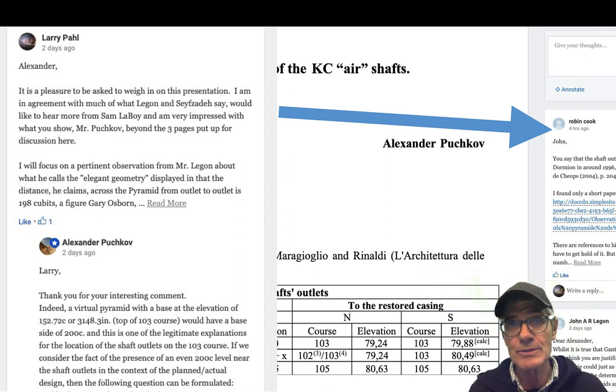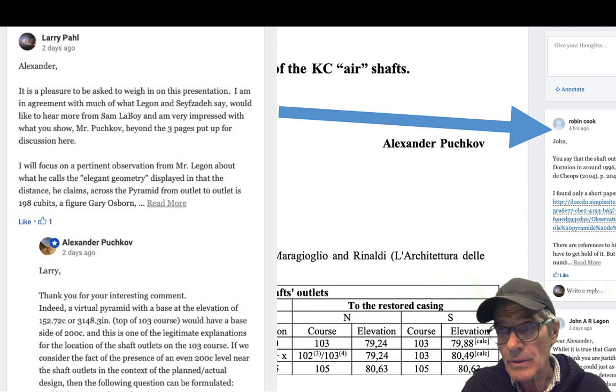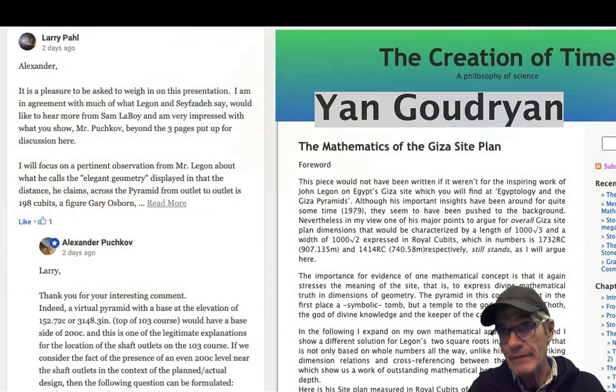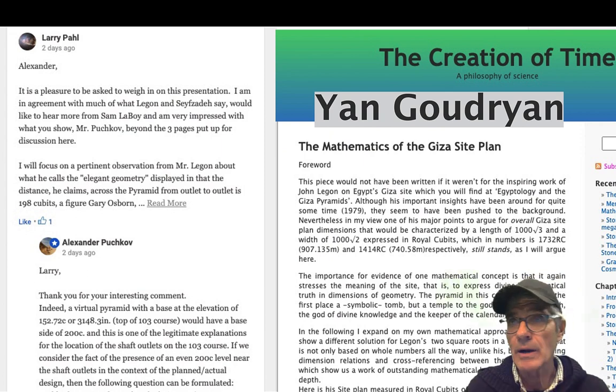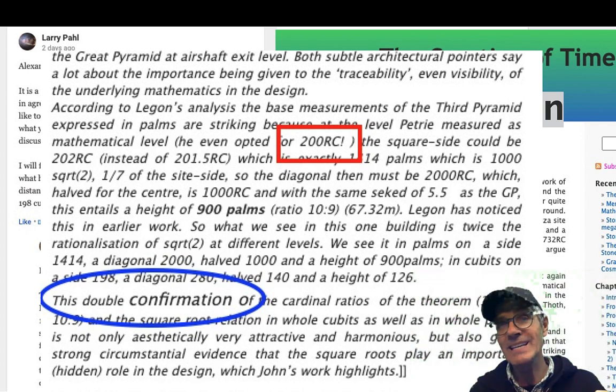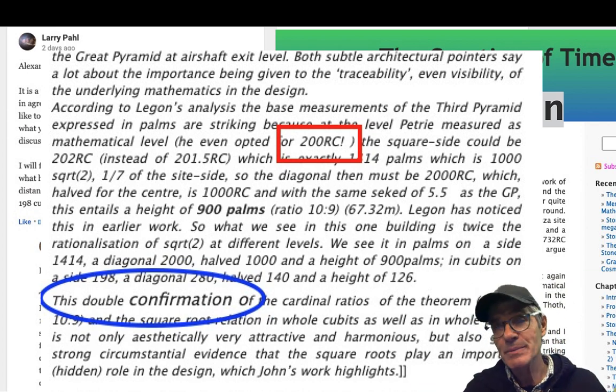Here's a great researcher agreeing with me. Other researchers - Leggan, Sam Laboy weighed in on this, Manu Seyfzadeh. The fact that Alexander Puchkov gave very positive feedback to my 200-cubit theory is like an affirmation of it. Here's another researcher, Jan Gudrian. He does a lot of work with John Leggan. He wrote about how it was a double confirmation of some numbers. Double confirmation means both the 198, which he's using, but also Flinders Petrie's 200 royal cubits. So again, he talks about both 198 and the 200 as being kind of confirmed.